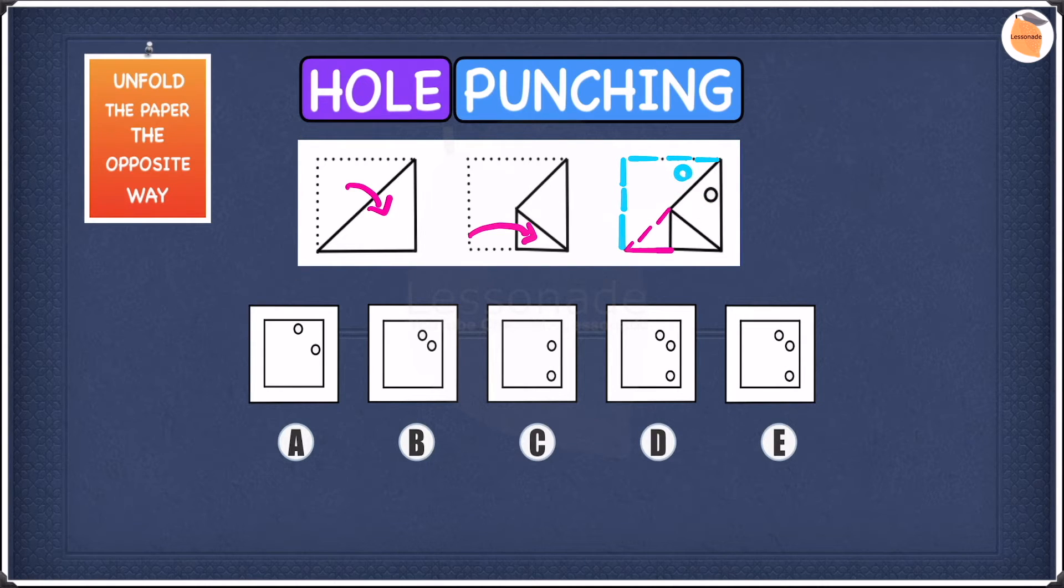So we can see that we have two holes in our answer. Which means we can straight away cross off the likes of D and E because they all have three holes and not two.